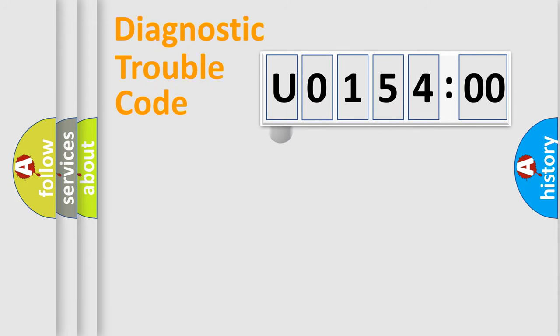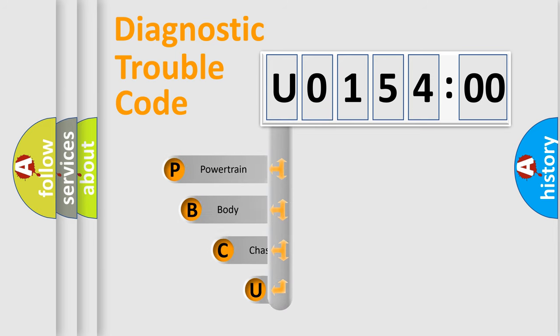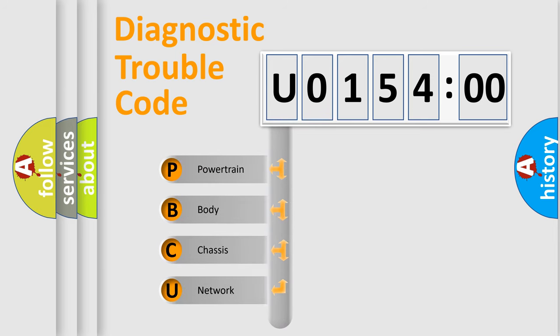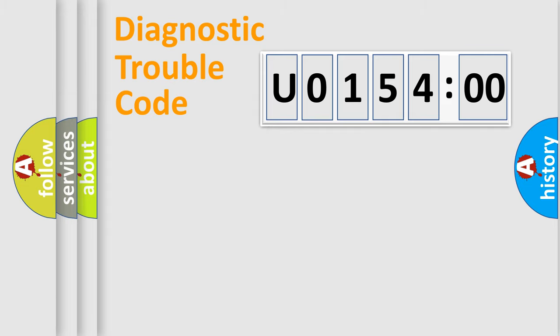First, let's look at the history of diagnostic fault code composition according to the OBD2 protocol, which is unified for all automakers since 2000. We divide the electric system of the automobile into four basic units: Powertrain, Body, Chassis, and Network.